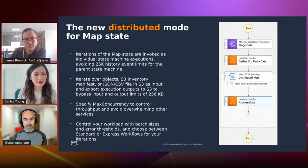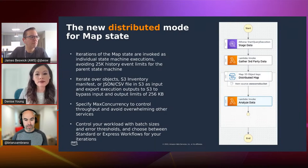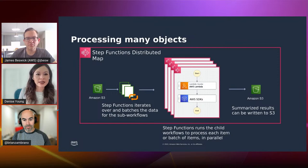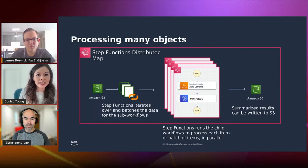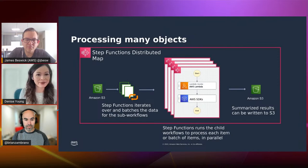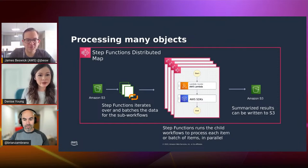To summarize: you give Step Functions an S3 bucket, Step Functions iterates over the data set and invokes multiple child workflow executions to process it, runs with high concurrency and large-scale parallelism, and once processing is complete, the output can optionally be written back to S3. So what sort of developers and industries are using this most commonly, and what are their use cases?